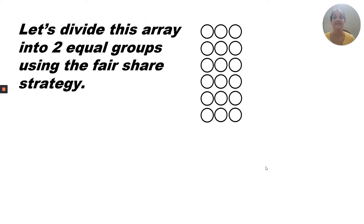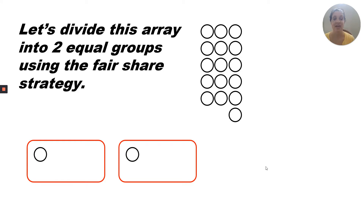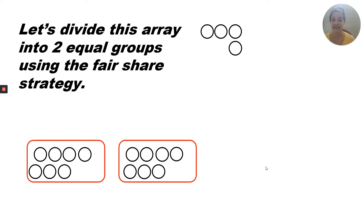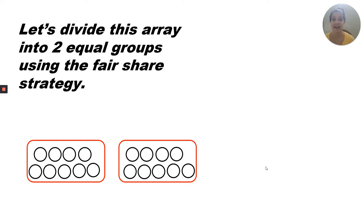Let's divide this array into two equal groups using the fair share strategy. We'll start taking them off the bottom, putting one in each group: one, two, three, four, five, six, seven, eight, nine. We've used all of the circles and shared them into two groups. So now we have two groups with nine in each group.